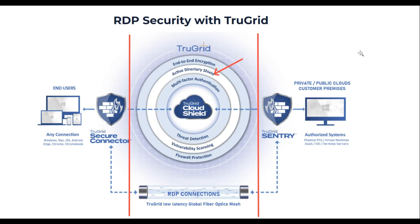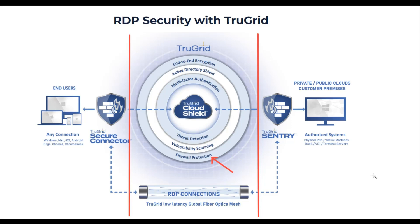Cloud Shield shields Active Directory from brute force attacks. It includes multi-factor authentication, which is enabled by default for maximum security. Customers with Office 365 can also use their Azure MFA. Cloud Shield includes systems and processes that detect threats within its ecosystem, and third-party systems are used to scan for vulnerabilities. Finally, TrueGrid Cloud Shield protects customers' firewalls, enabling customers to close all firewall ports, thus allowing them to become invisible over the internet.